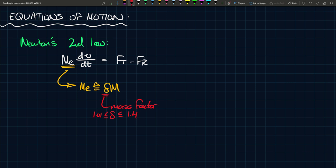The mass factor delta is typically between 1.01 and 1.4. This is the effective mass, that's why it's called M_E. F_T is the tractive force, the force exerted by the engine or motor that propels the vehicle forward. And F_R is the road load.